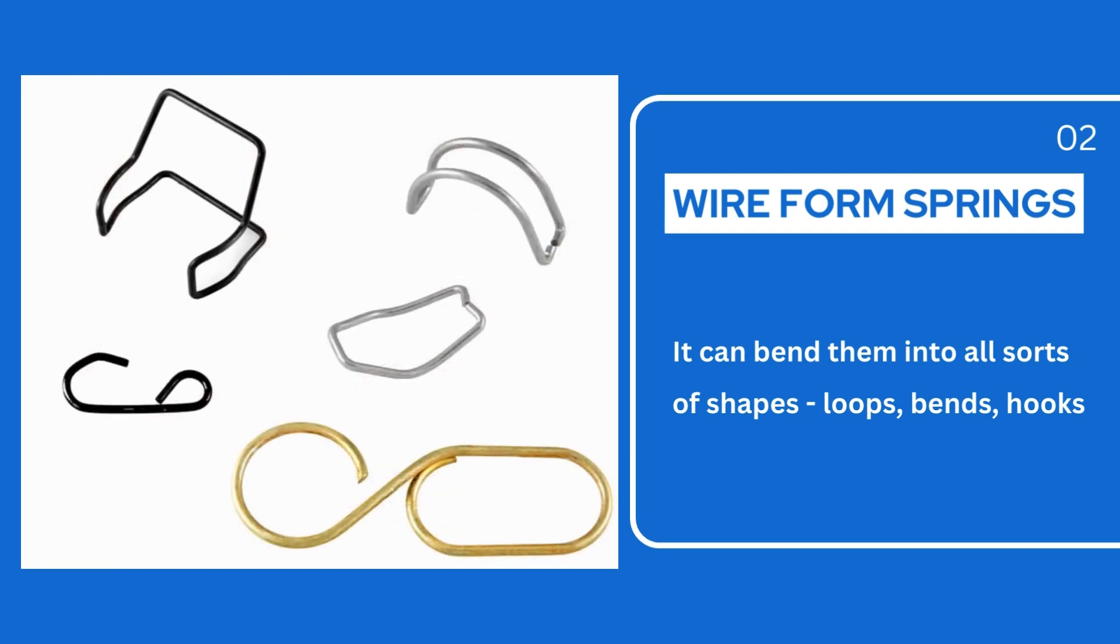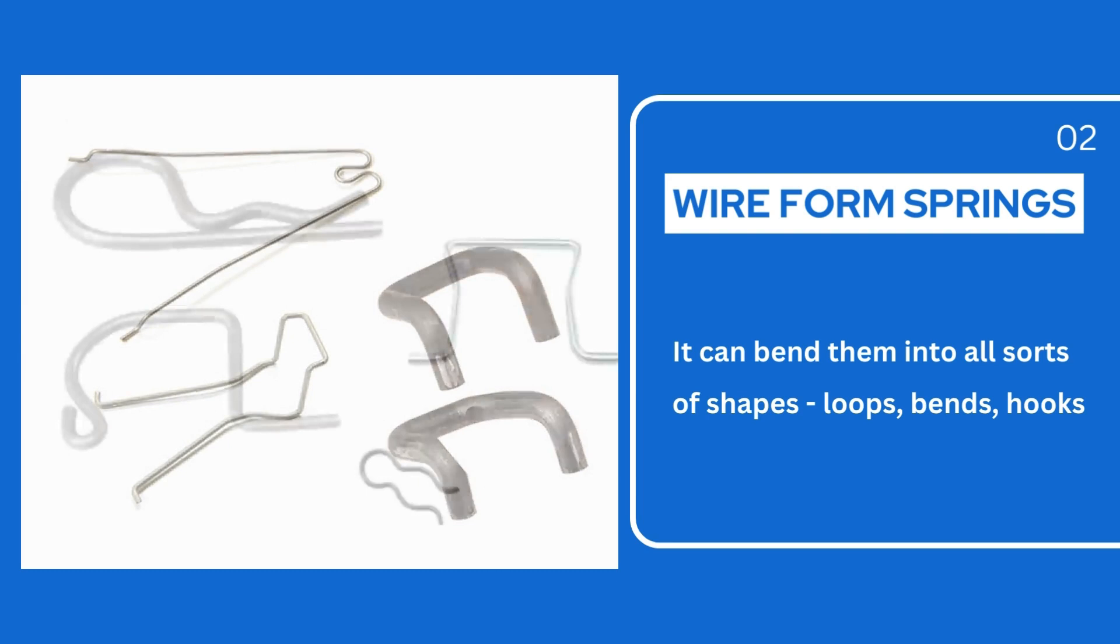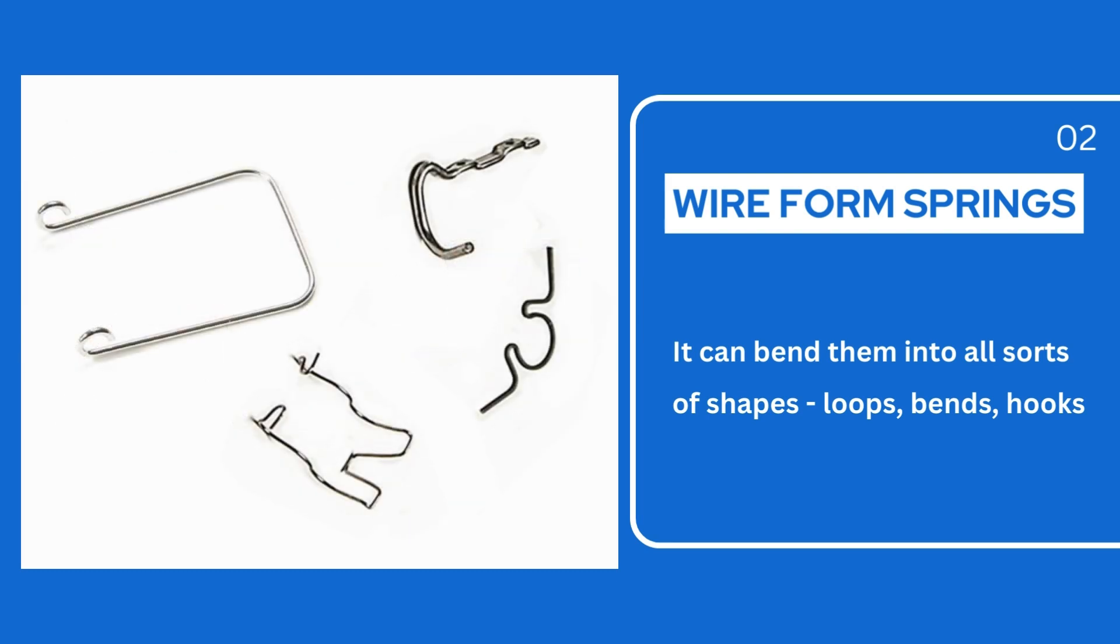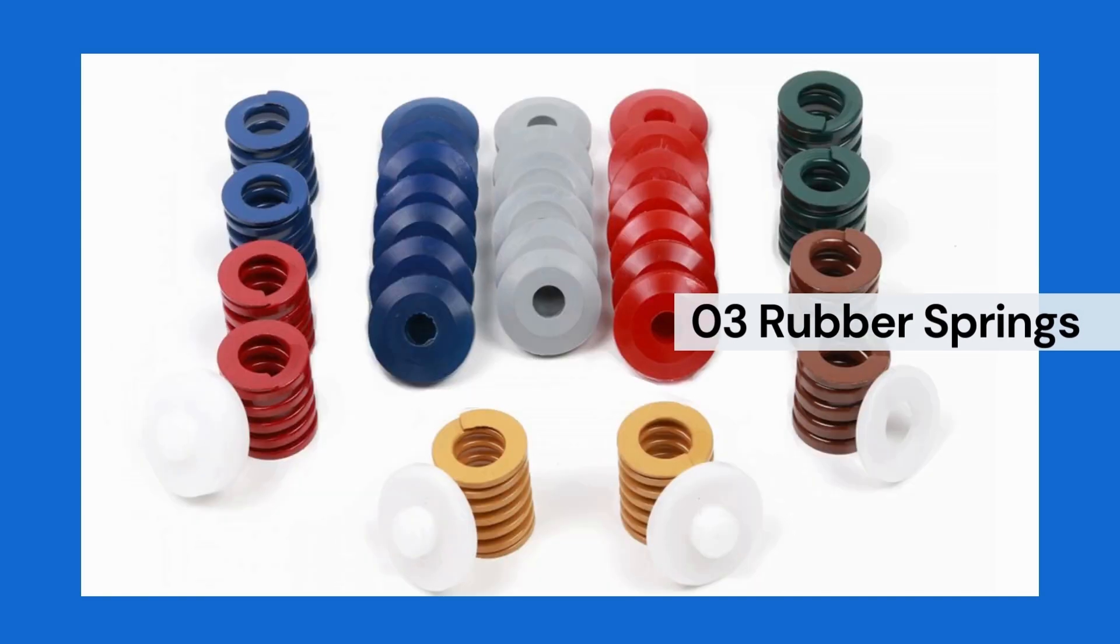Wire form springs are formed by a single metal wire wound into shape. You can bend them into all sorts of shapes: loops, bends, hooks, you name it. Last but not least, we have rubber springs. They have excellent damping abilities and are great at reducing noise and absorbing shocks and vibrations.